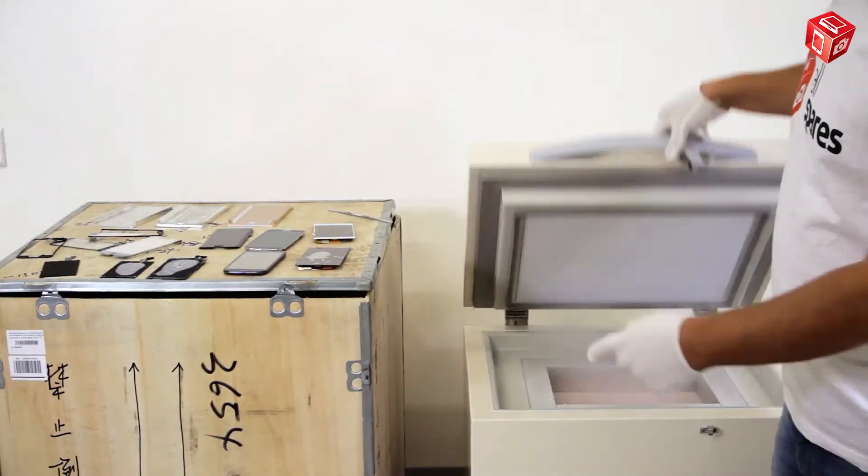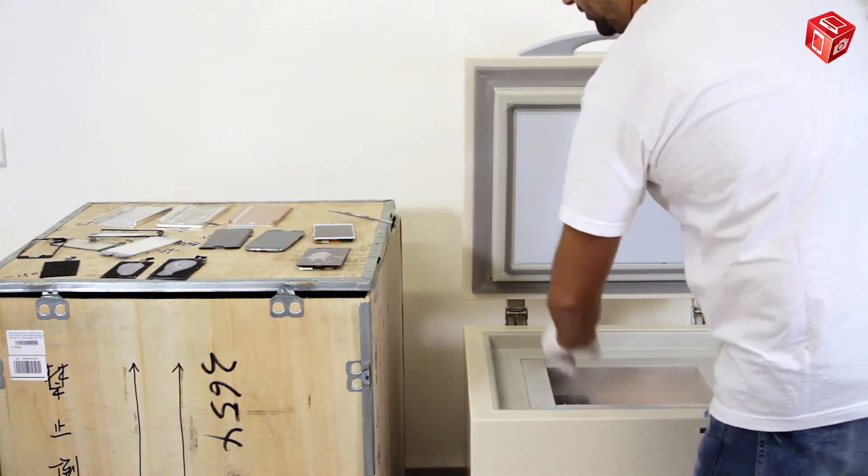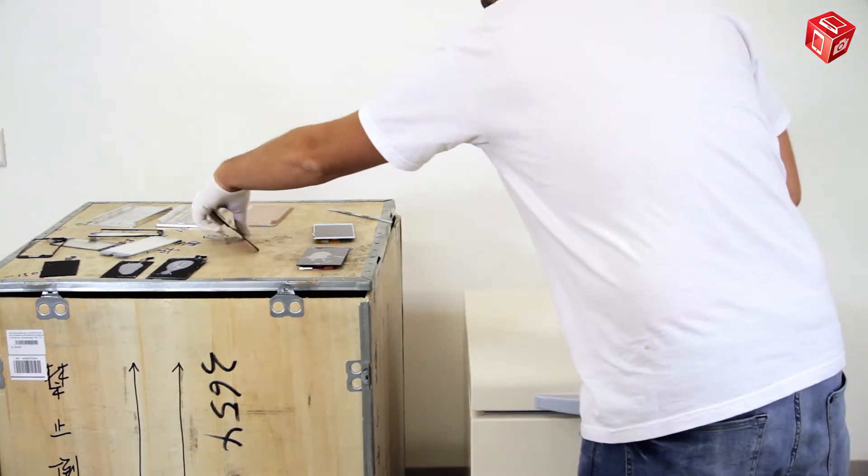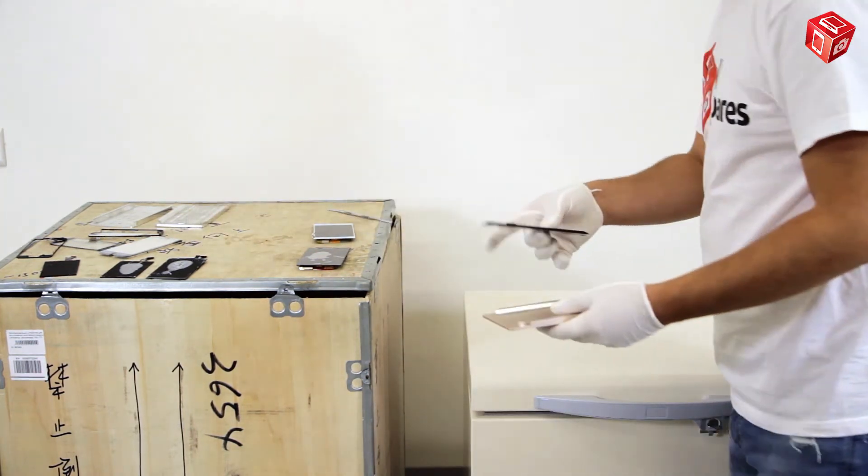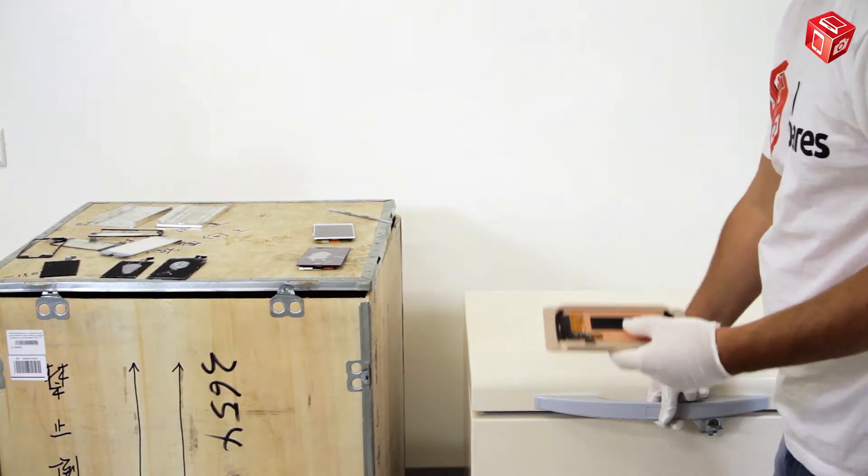We now turn to Samsung display modules. Put the displays into the chamber. With Samsung Edge screens, you will need to put them first in their special trays for better cooling, and then place them into the chamber.